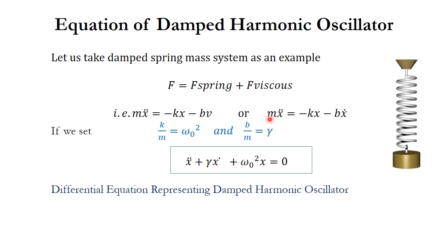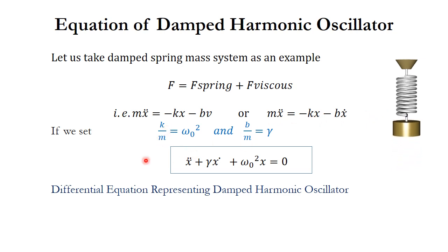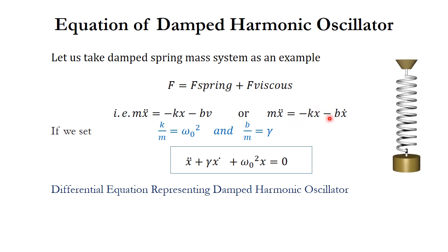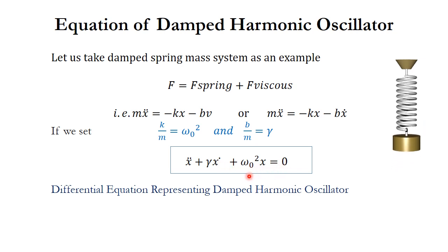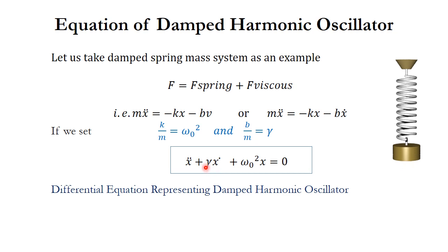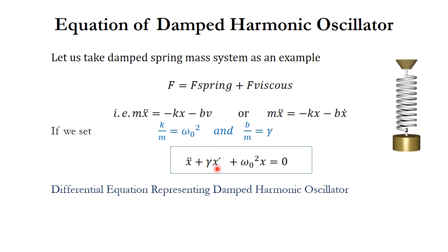Dividing throughout by M and setting K/M as omega_0 squared and B/M as gamma, and taking the two terms to the left side, this equation can be written as: x-double-dot plus gamma times x-dot plus omega_0 squared times x equals 0. This is the differential equation representing the Damped Harmonic Oscillator, where the additional term compared to the simple harmonic oscillator equation is gamma times x-dot. In the absence of this term, the equation becomes the equation of the simple harmonic oscillator.